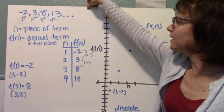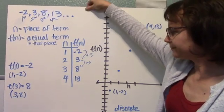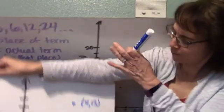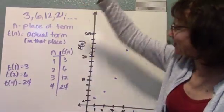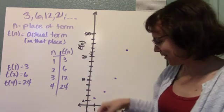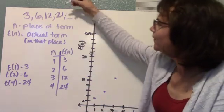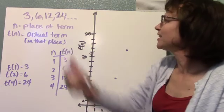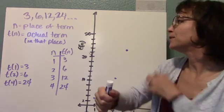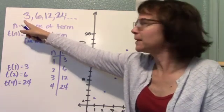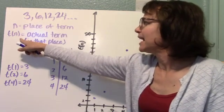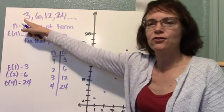Now let's take a look at what geometric looks like. In our geometric sequence, we have 3, 6, 12, and 24. Same sort of thing. n is the place of the term. So in the first place, when n equals 1, the actual term, t of 1, is 3. So t of 1 equals 3.